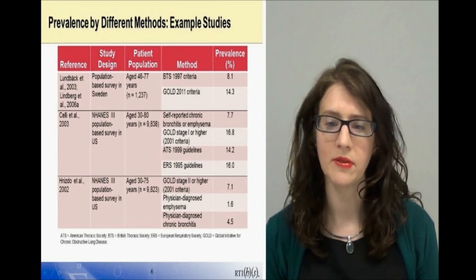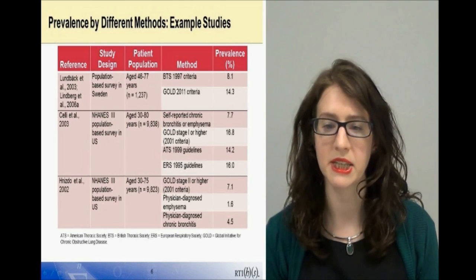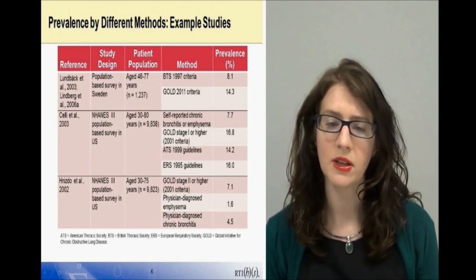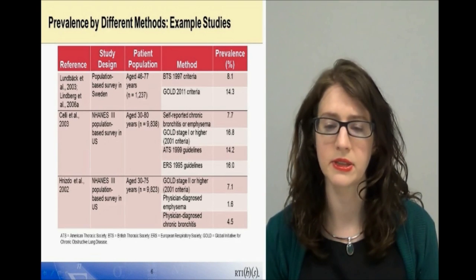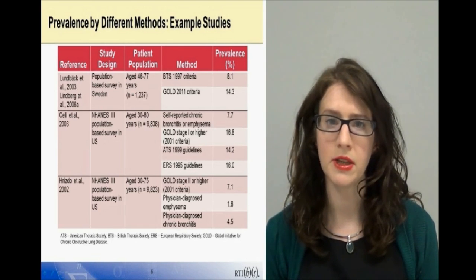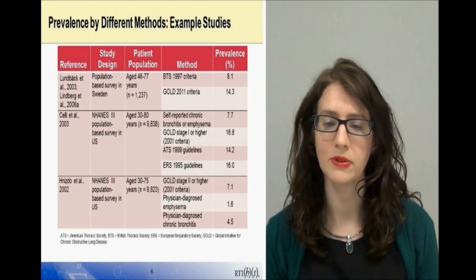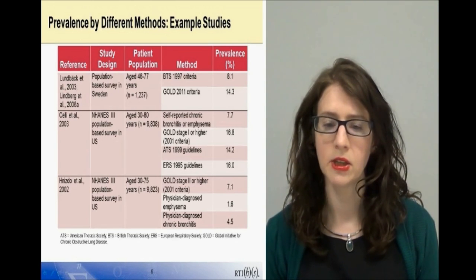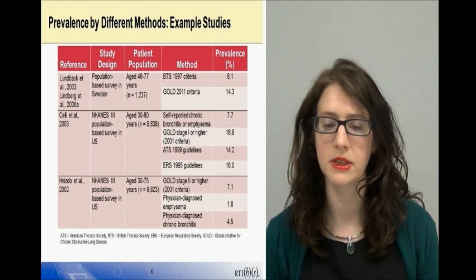Our review provides further evidence that obtaining reliable COPD prevalence estimates is challenging. Several articles compared diagnosis and classification methods across the same populations and, in general, found that individuals identified by spirometry and classified using the 2001 GOLD criteria had a greater COPD prevalence than when using other classification methods such as the British Thoracic Society, European Respiratory Society or American Thoracic Society criteria. Other articles reported high prevalence estimates using spirometry-based methods when compared with symptom-based diagnosis or self-reporting.